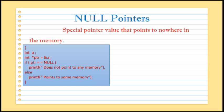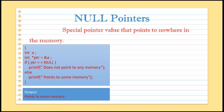Here the condition is false, hence ptr is not a null pointer and it is pointing somewhere in the memory location. This is the output — because the condition is false, the else part will be executed, so the output will be 'points to some location'.